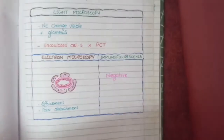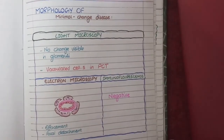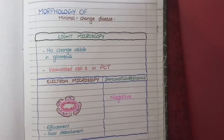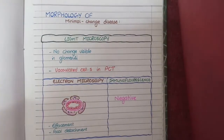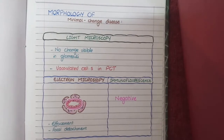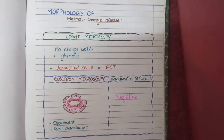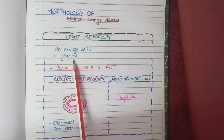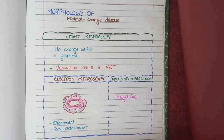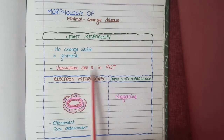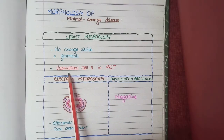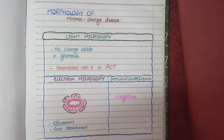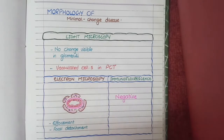Now for the morphology of minimal change disease. Glomerular disease morphology is studied under three headings: light microscopy, electron microscopy, and immunofluorescence. On light microscopy, minimal change disease shows no or minimal change in the structure of glomeruli — hence the name. However, in cells of the proximal convoluted tubule, vacuoles appear in the cytoplasm, formed by ingestion of proteins leaked into the tubules as part of nephrotic syndrome.